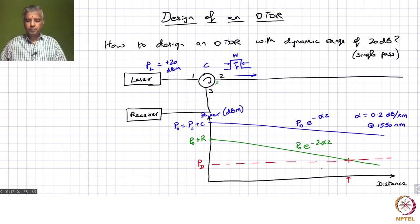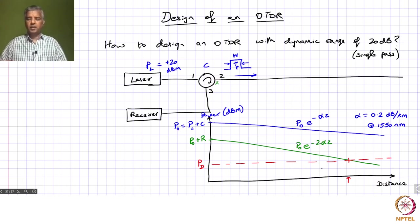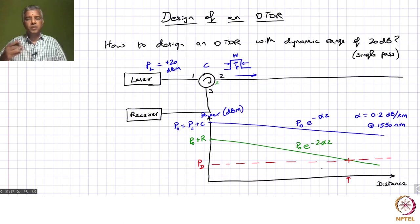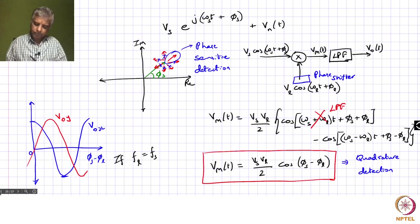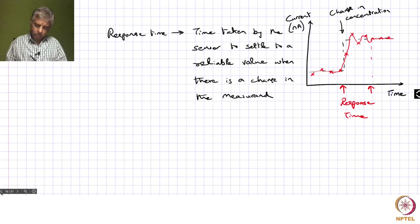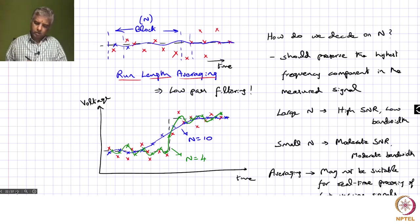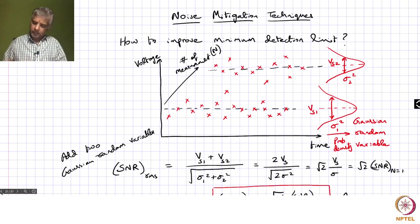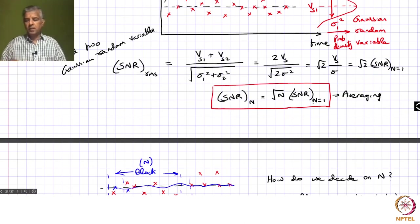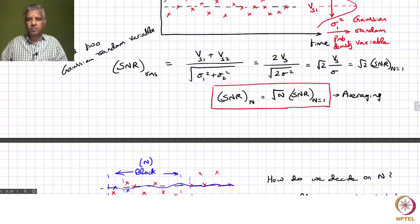We can improve the situation because the fiber properties do not change over a few minutes. We can afford to send one pulse and get one trace, then shoot another pulse and get another trace, and so on, adding all these traces. We saw previously that when we add all these traces we are essentially performing averaging. If we average N traces, the signal-to-noise ratio improves by a factor of √N.